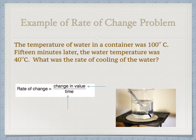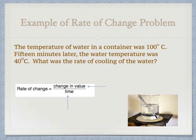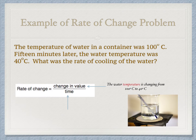We're still using that formula. For a rate of change, we need to figure out what is changing in the problem and by how much, and then divide by the time the change occurred over. This is a word problem — you need to go back and read carefully. What's changing here is the water temperature, from 100 to 40 degrees Celsius. The time it changed over is given in the problem: 15 minutes.